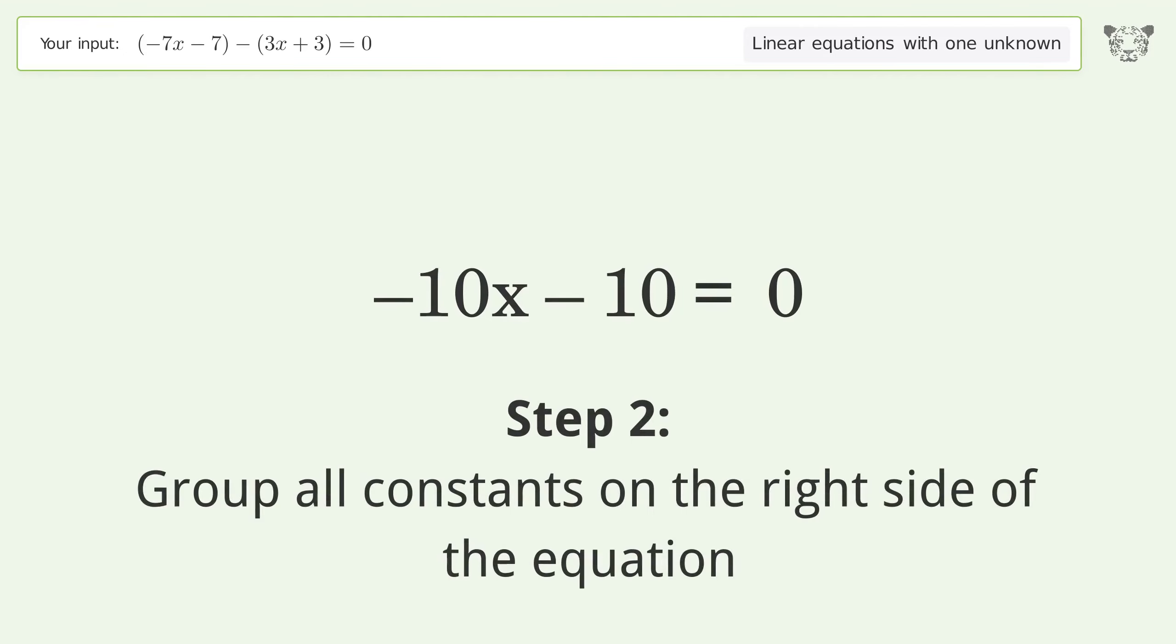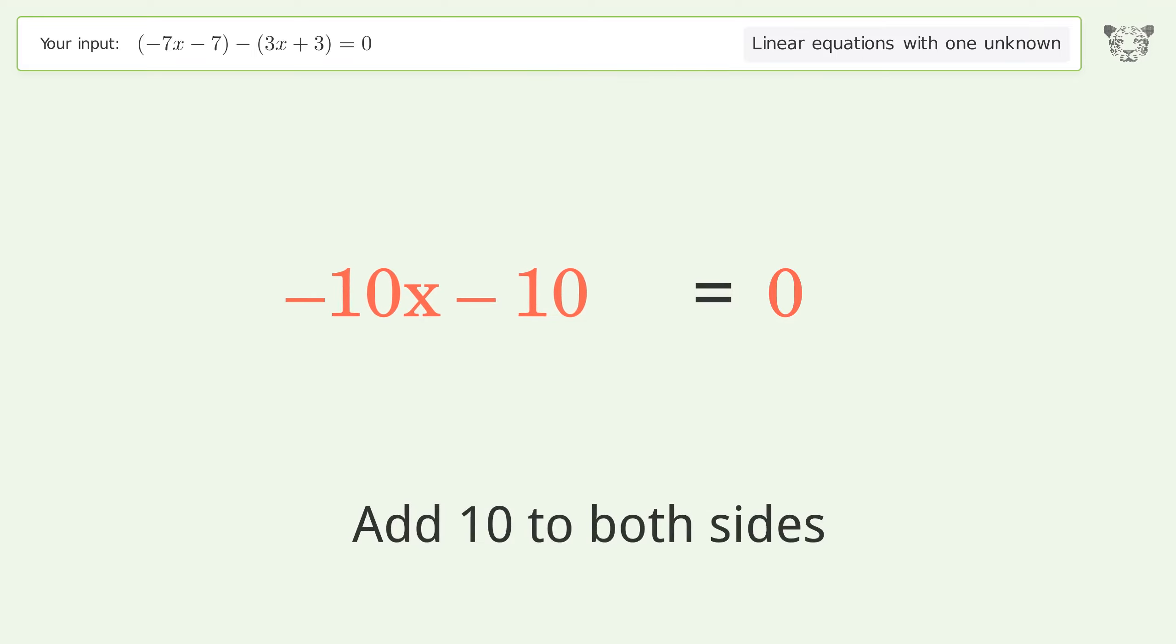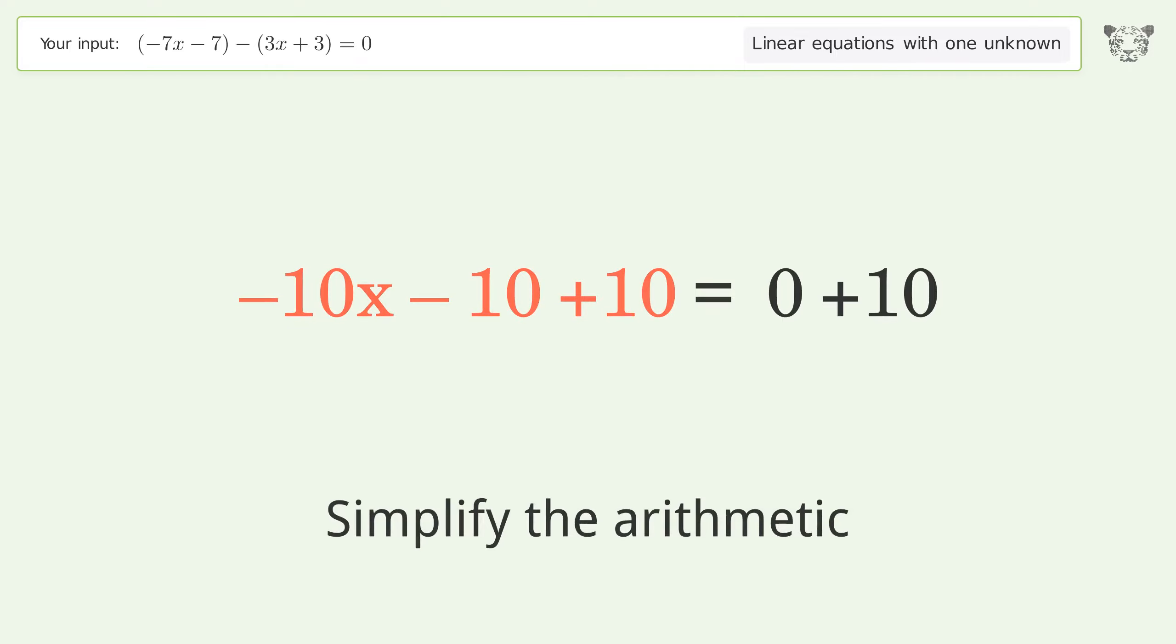Group all constants on the right side of the equation. Add 10 to both sides. Simplify the arithmetic.